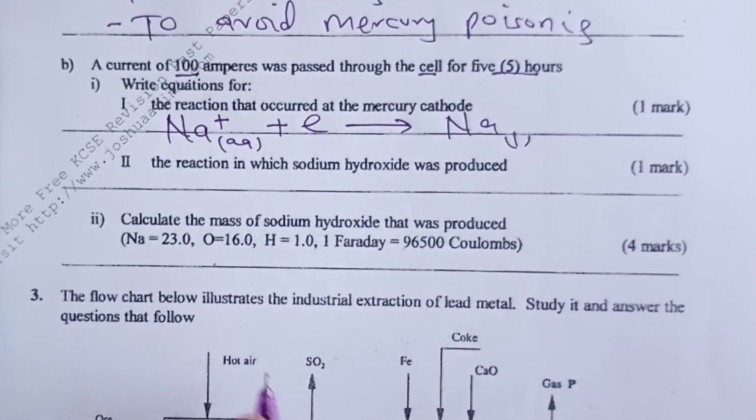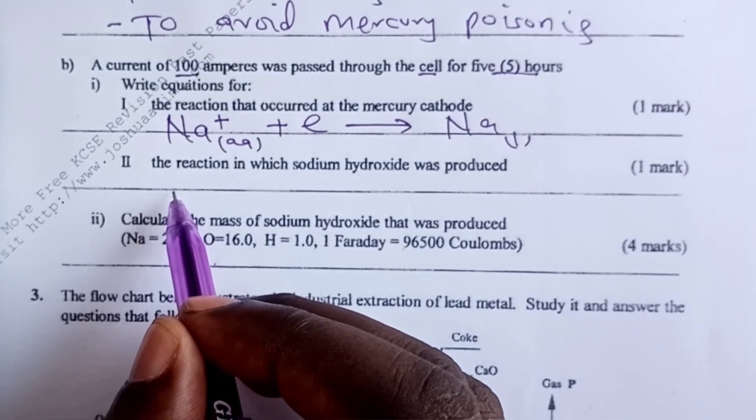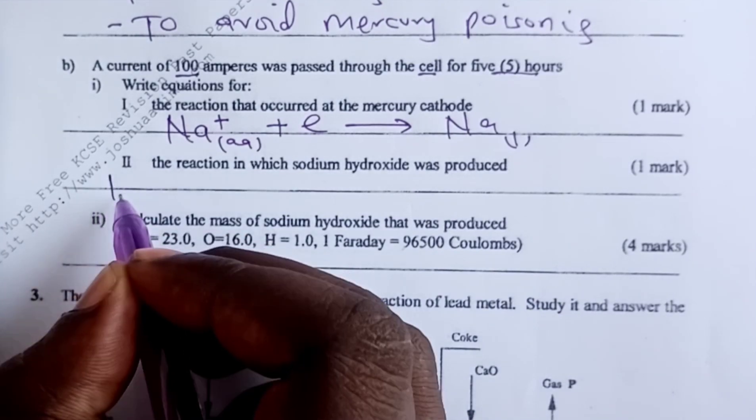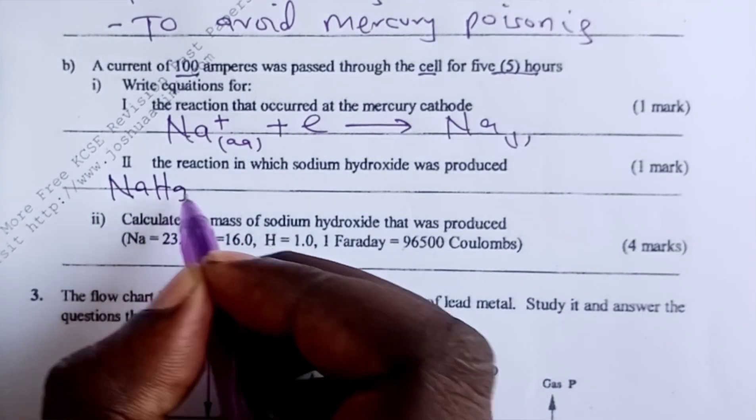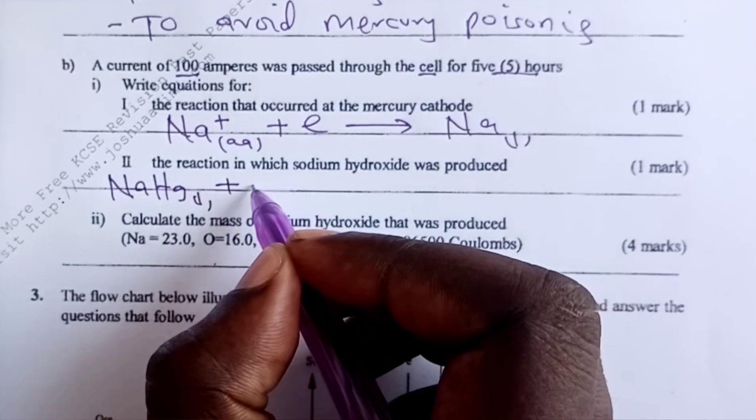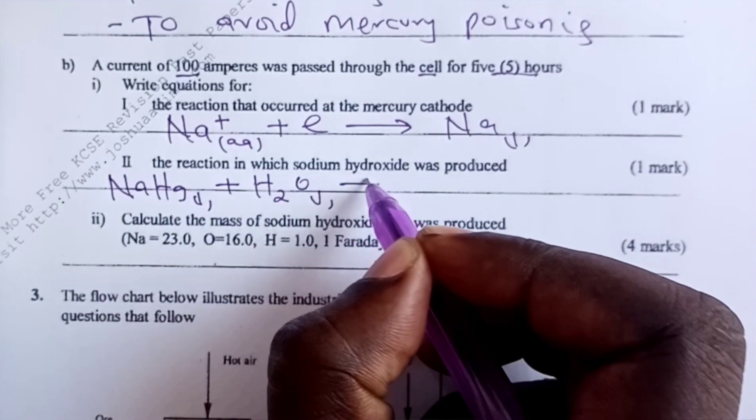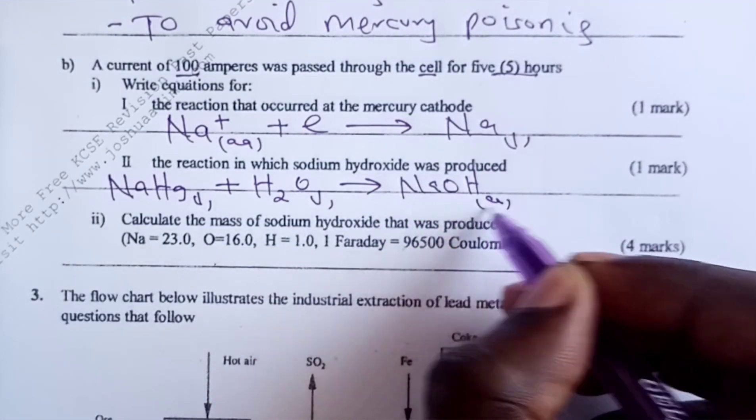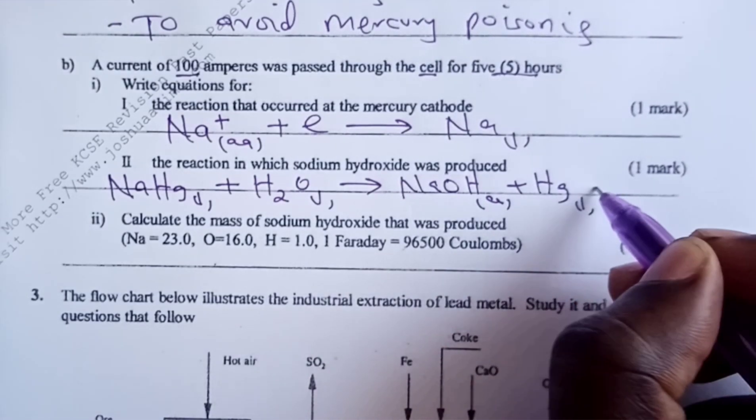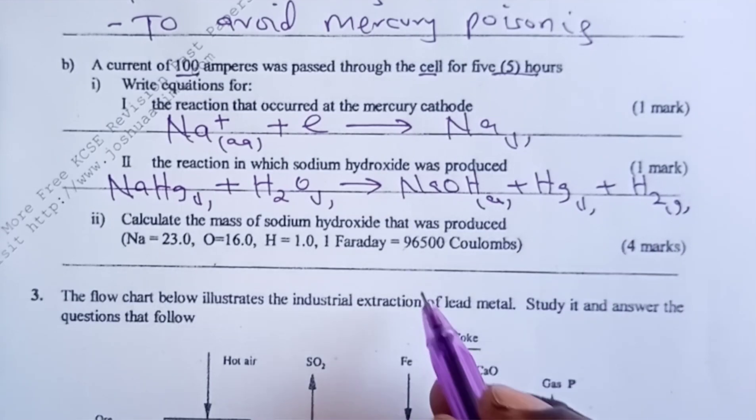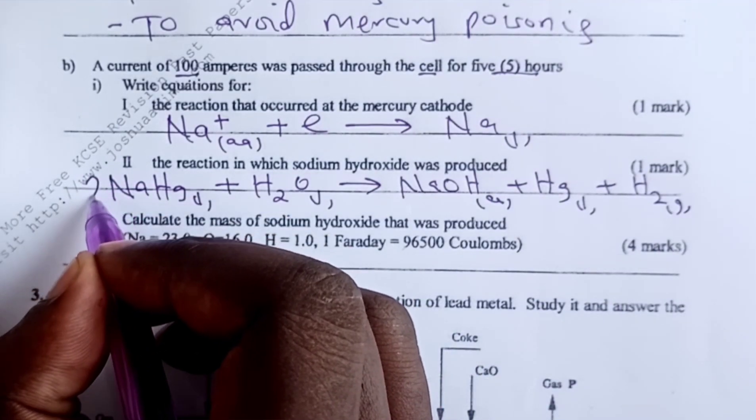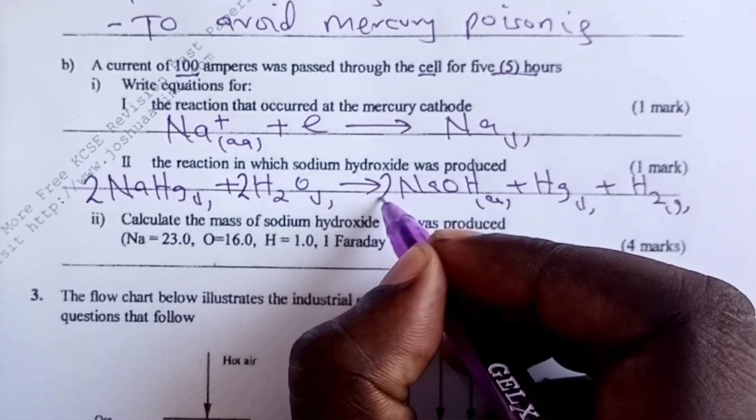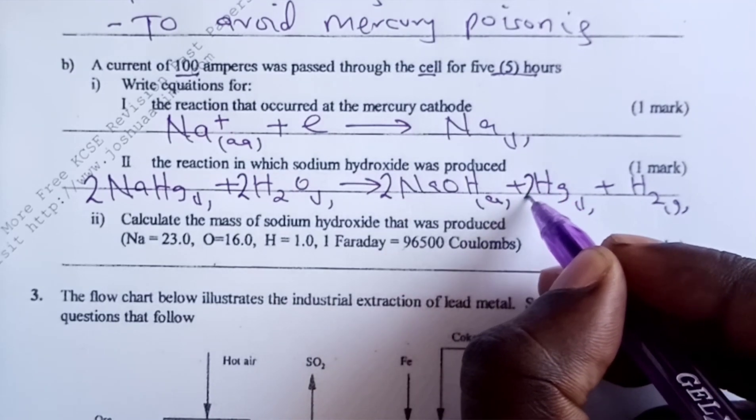We also asked to write the equation for the reaction in which sodium hydroxide is produced. The sodium mercury amalgam is reacted with water in the downer cell and we are able to produce sodium hydroxide. We recycle our mercury and get hydrogen gas as well. To get the one mark, we need to balance with a two on the amalgam, a two on water, a two on sodium hydroxide, and a two on mercury.